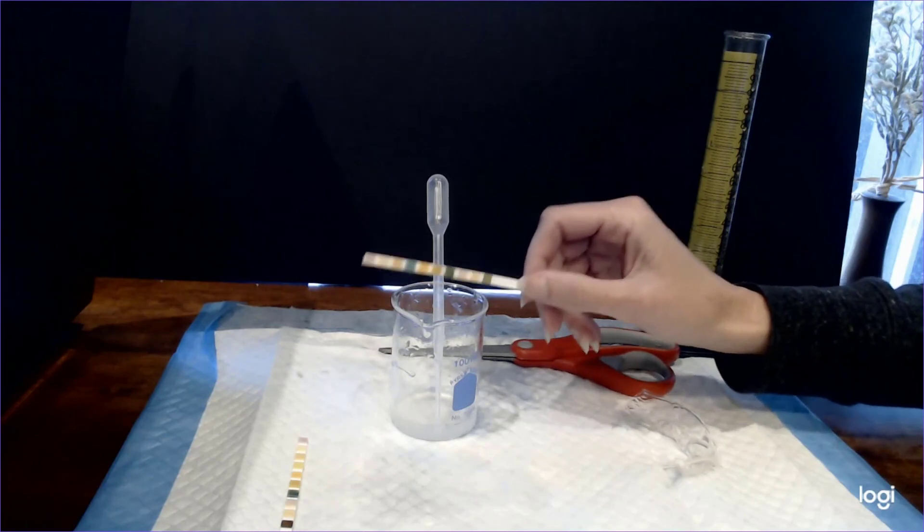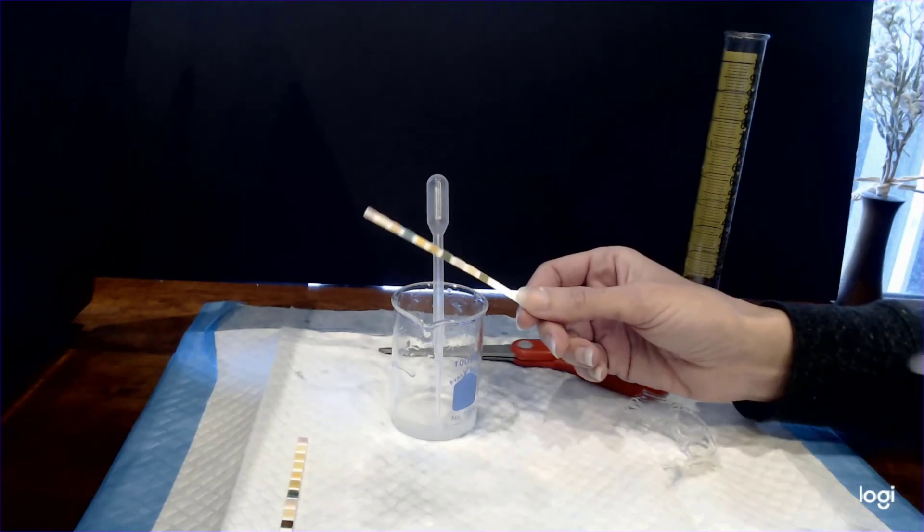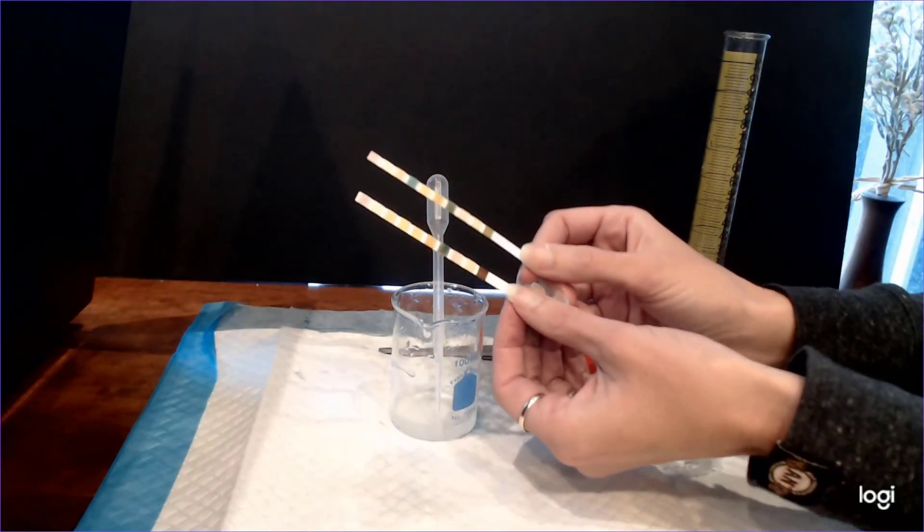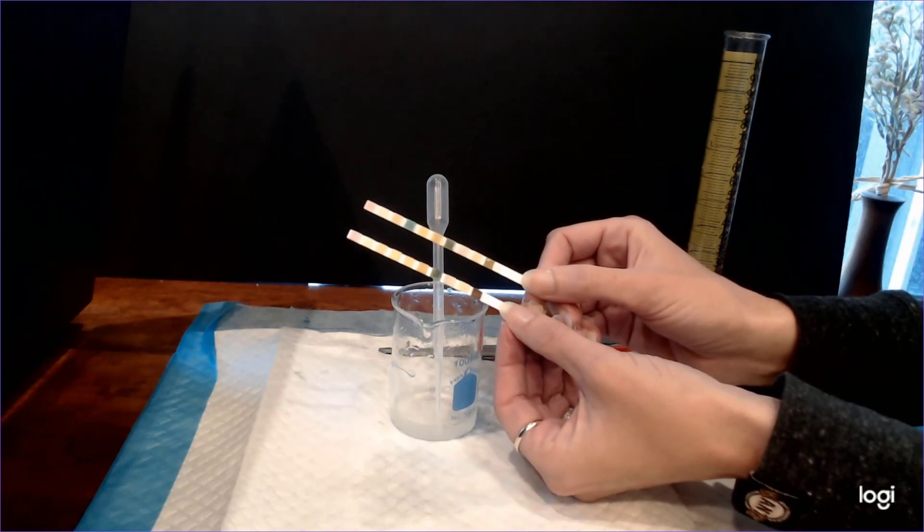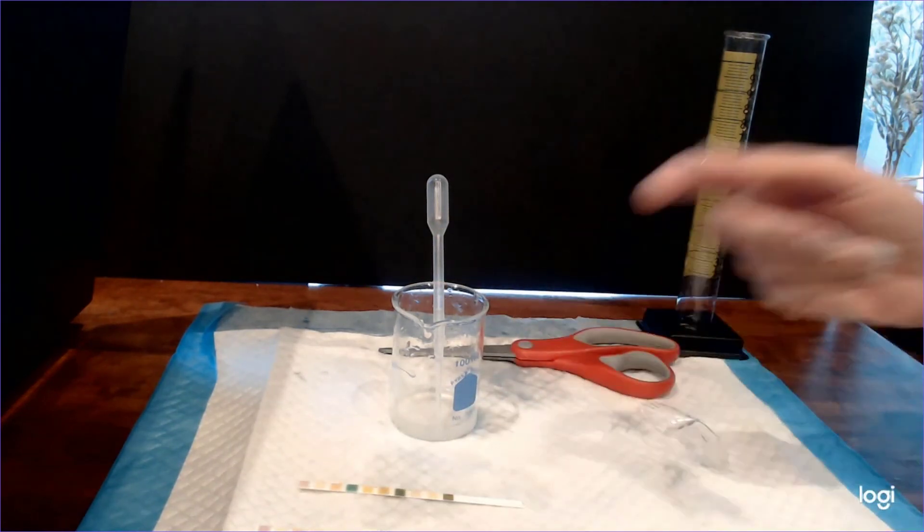So once again, once you do that then go ahead and rewind this video and look again at the key so that you can determine the presence of sugar and protein.